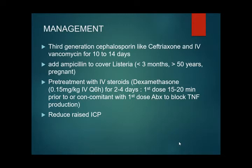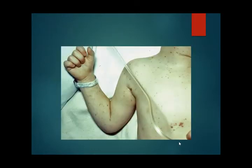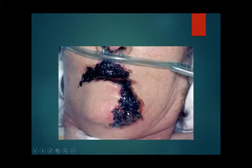Meningococcal meningitis is a common organism for meningitis. It can cause meningococcemia with petechial/purpuric rashes, overwhelming sepsis, DIC, and adrenal hemorrhage. It can cause simple meningitis with rash, meningitis without rash, and the mortality is 3–10%. Rash can be seen on the extremities as well as on the trunk, and can be a necrotizing rash around the lips and chin.